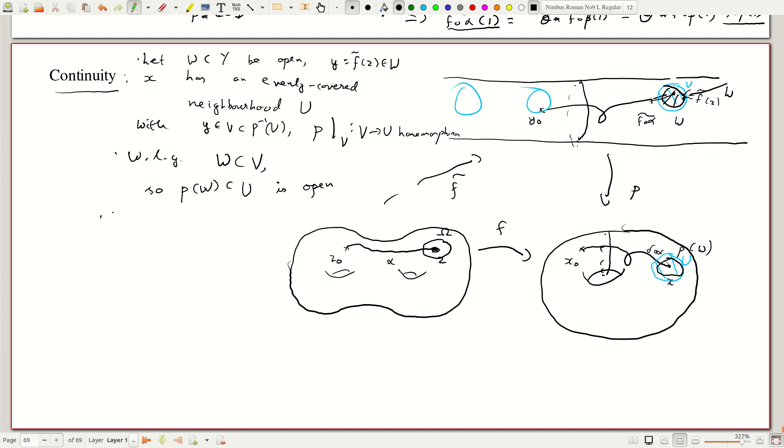So as f is continuous, there exists omega contained in z open with little z in omega,